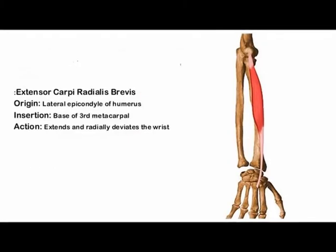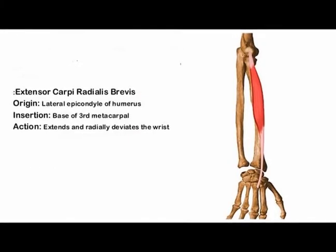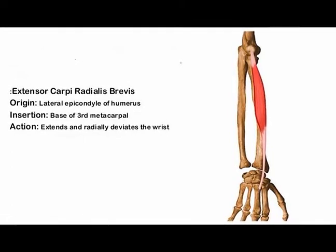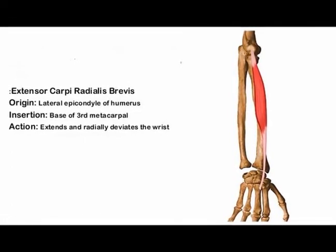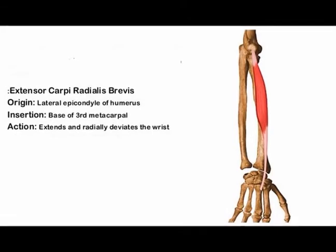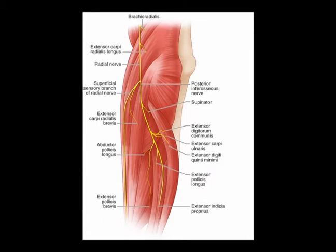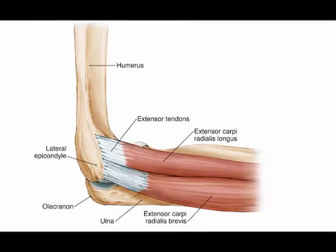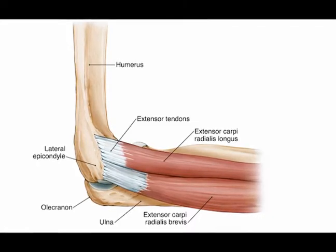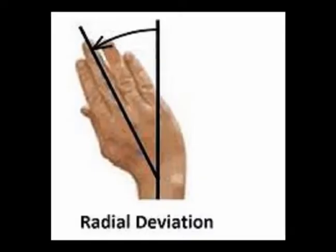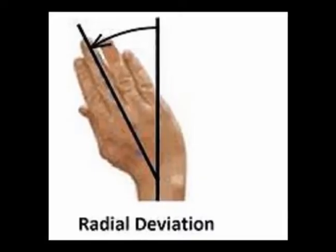The origin of the extensor carpi radialis brevis is the lateral epicondyle of the humerus. The insertion is the dorsal base of the third metacarpal bone. The innervation is the deep branch of the radial nerve from vertebral levels C7 and C8. The concentric actions are wrist extension and radial deviation.